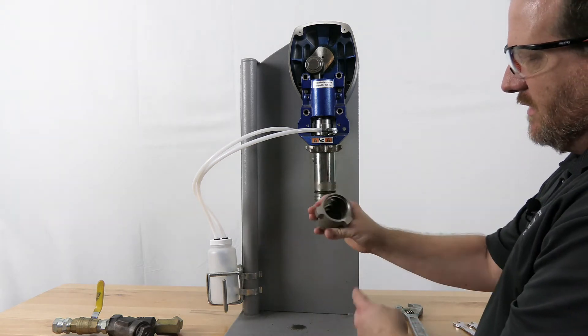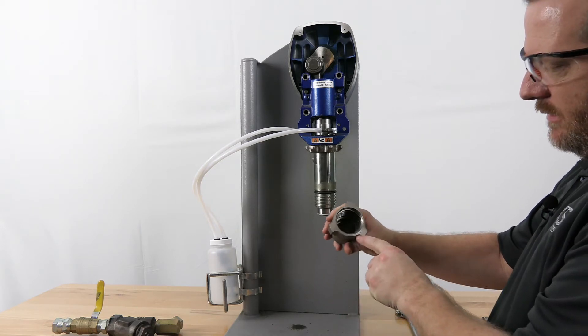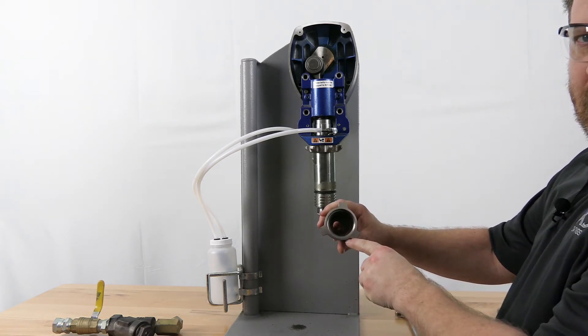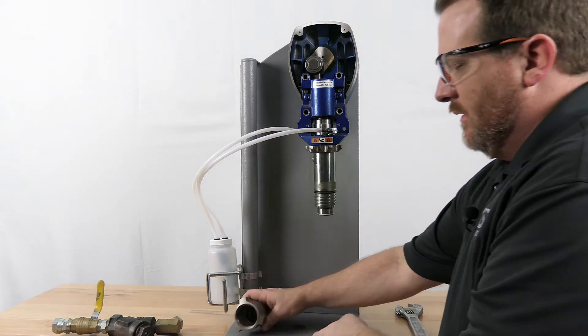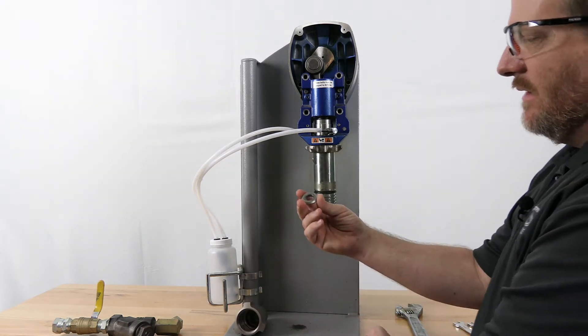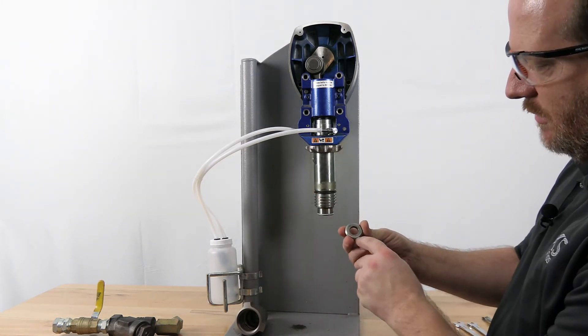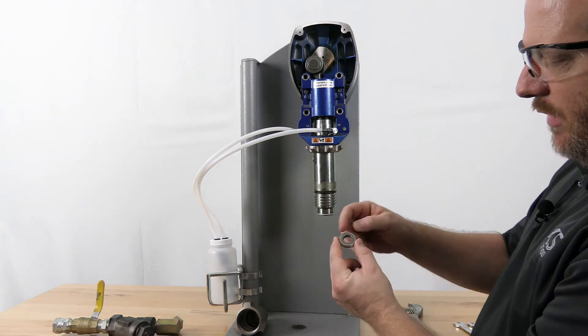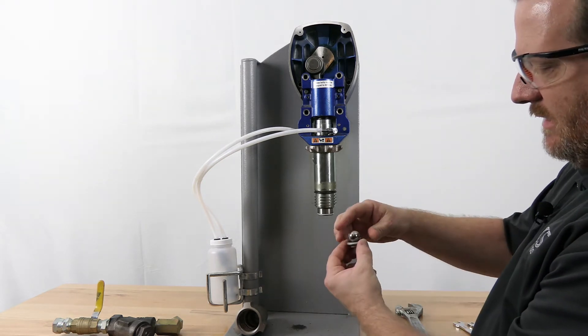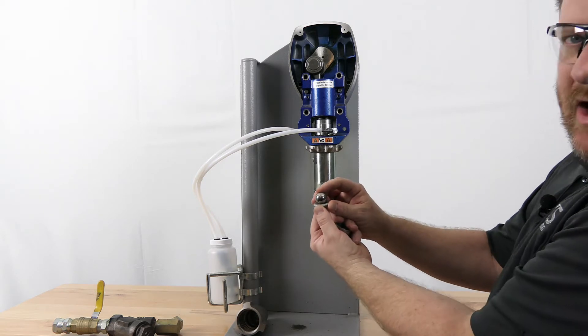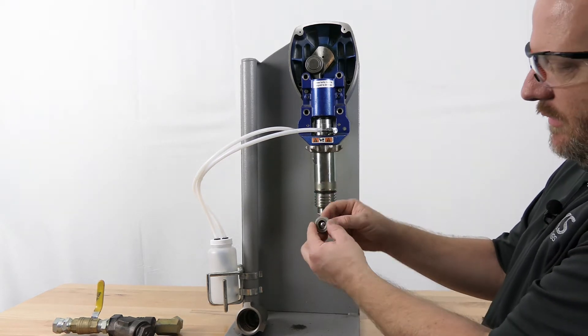You've got this empty housing - spray it out with brake clean, clean it up. You will see there is a white Teflon o-ring down in the bottom of that. It needs to be there. You've got a seat - you want to check this and make sure there's no nicks or scratches or anything built up on that.